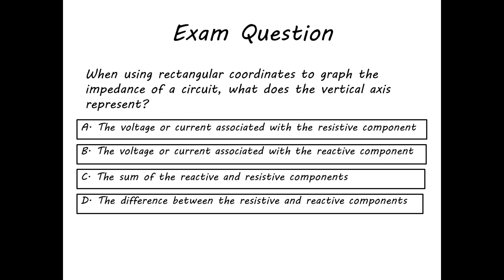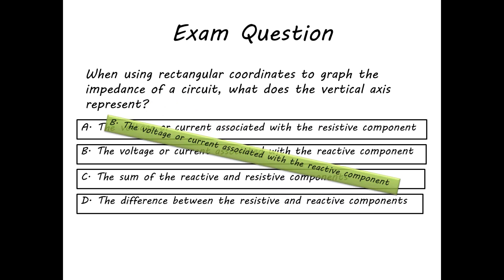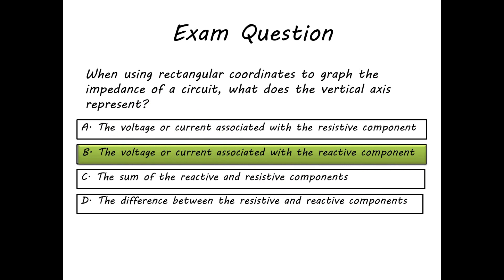Next question: when using rectangular coordinates to graph the impedance of a circuit, what does the vertical axis represent? The impedances along the vertical axis are reactive, so you'll want to be looking for the reactive component — the voltage or current associated with the reactive component.